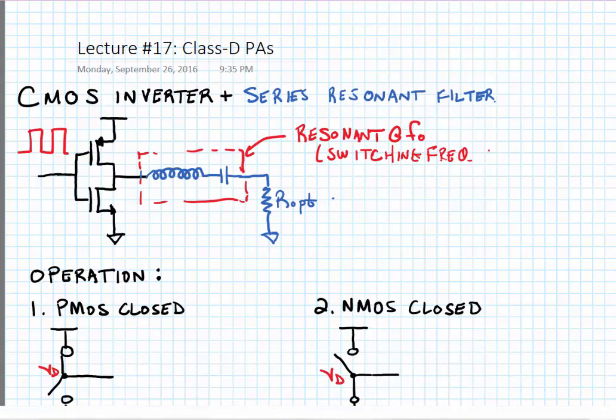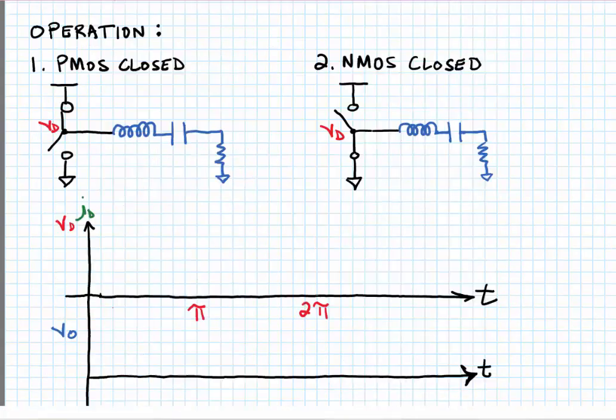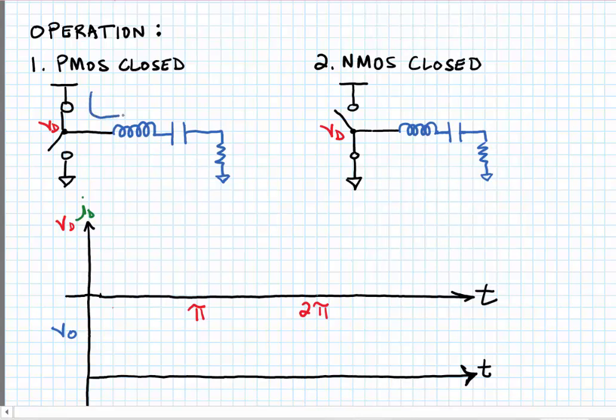So next we're going to look at the basic operation. When the PMOS transistor is closed, current flows from the supply to charge the capacitor, but because of the series resonant nature of this network, only the fundamental current can pass through to the load.